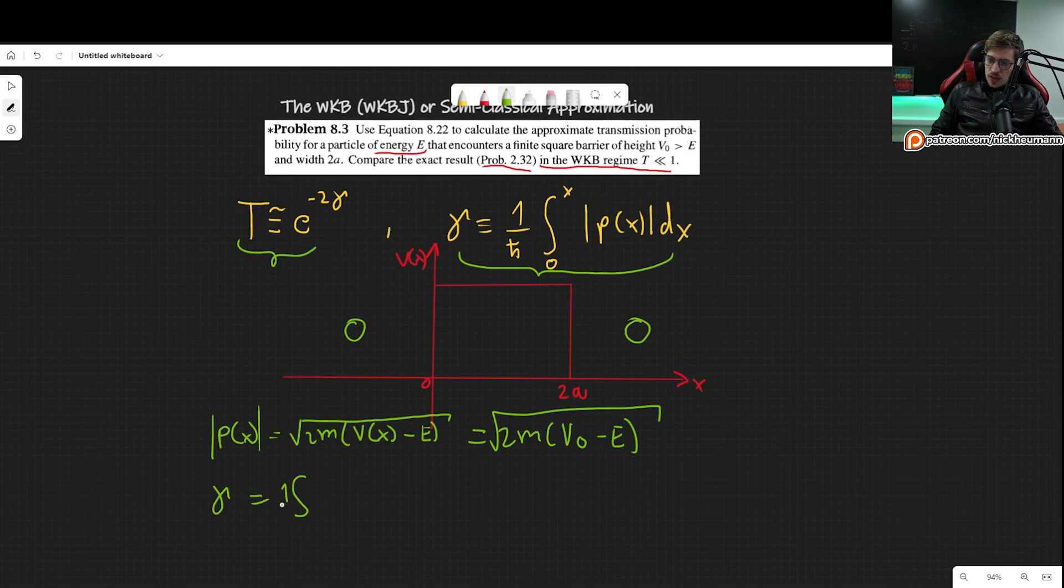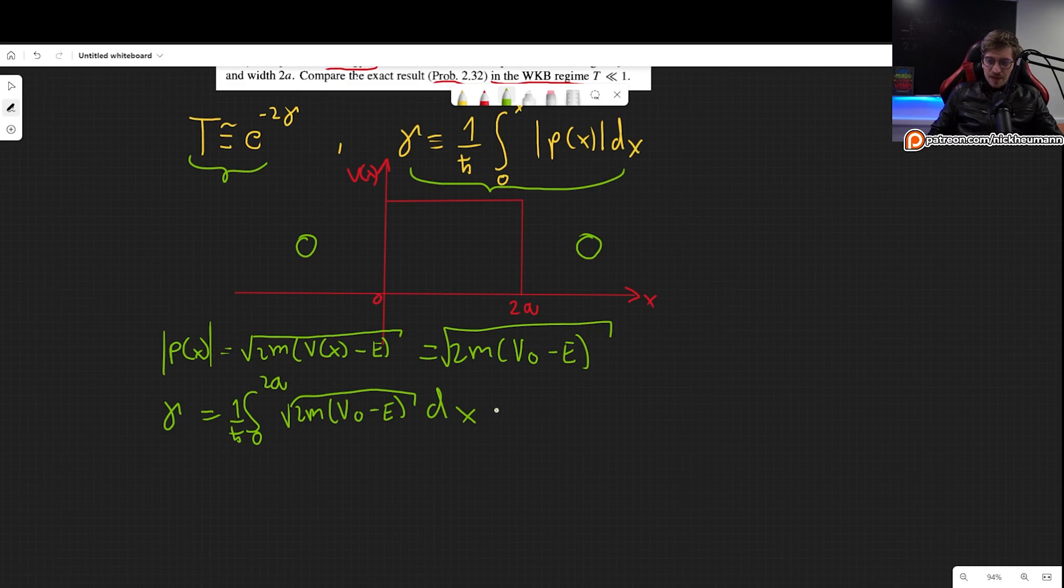What is our potential? Our potential here is 0, and it's V0 in here. And our gamma, this thing, is only for the WKB region, so this region where there is a potential. This is going to be 2m(V0 - E) inside of the square root. Now let's plug this into our gamma. This is going to be 1 over ℏ, and we integrate from 0 to 2a the square root of 2m(V0 - E).